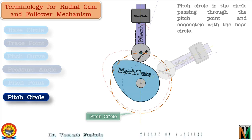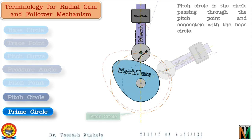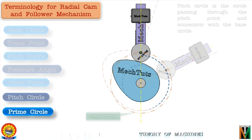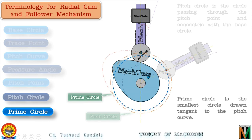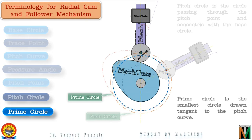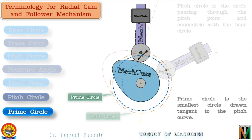The next term is prime circle. Just as the base circle is tangential to the cam profile, the prime circle is the smallest circle that can be drawn with the cam center as its center and tangential to the pitch curve. The radius of the prime circle equals the sum of the radius of the base circle and the radius of the roller. The prime circle describes the lowest position of the follower — below this the roller follower cannot move.